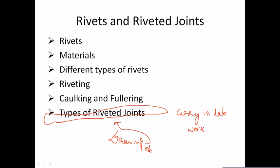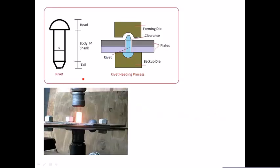A rivet is a mechanical member which is a fastener. You may have already come across fasteners like bolt and nut. Bolt and nut is a temporary fastener, but the rivet is a permanent fastener. Once you form the riveting over the parts you have joined, you can't disassemble it. If you want to disassemble it, you need to damage the rivet — that is why riveting is used to form a permanent joint.